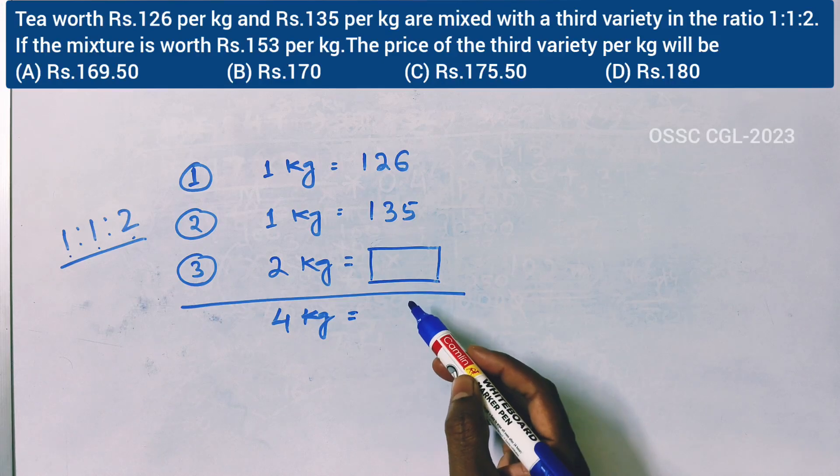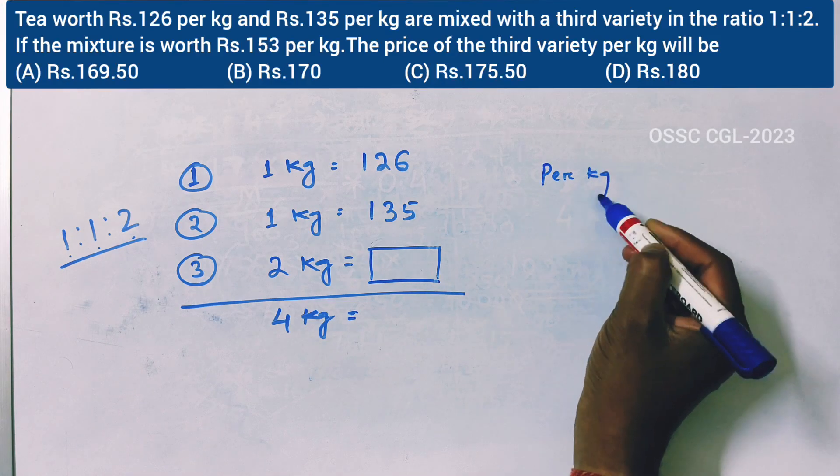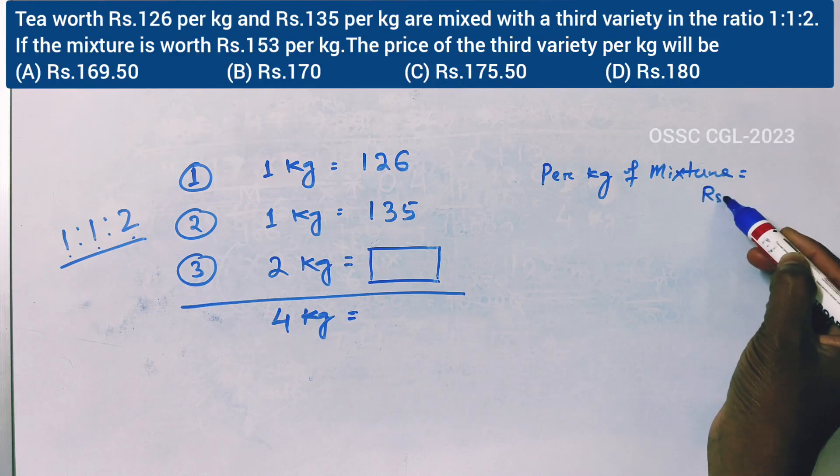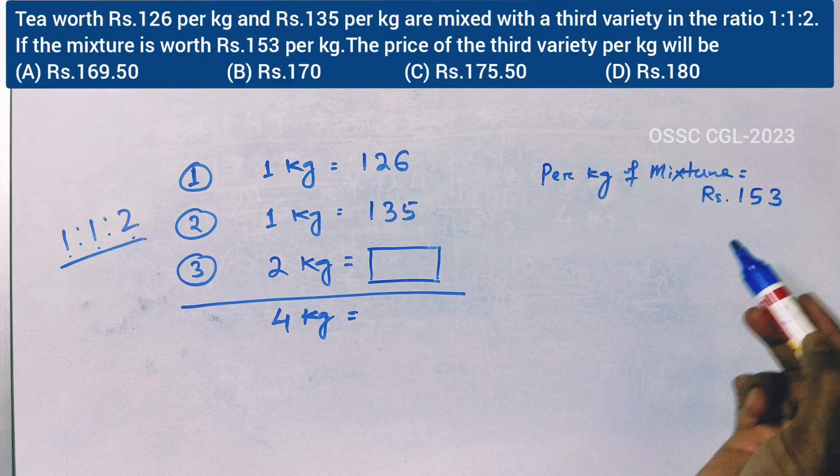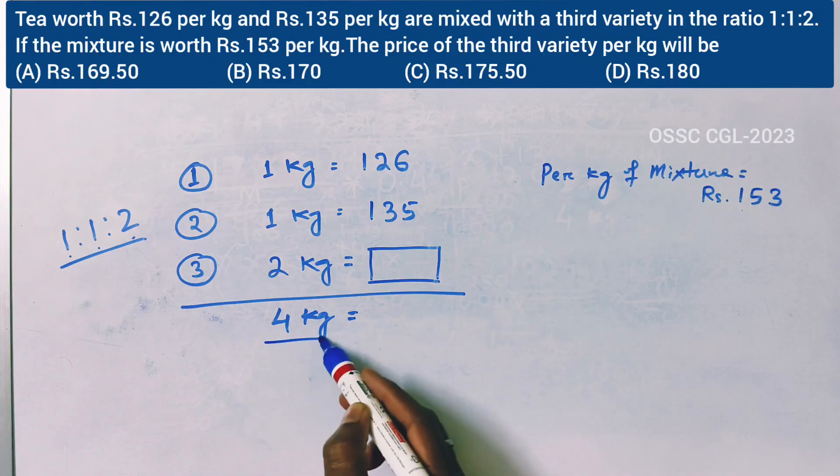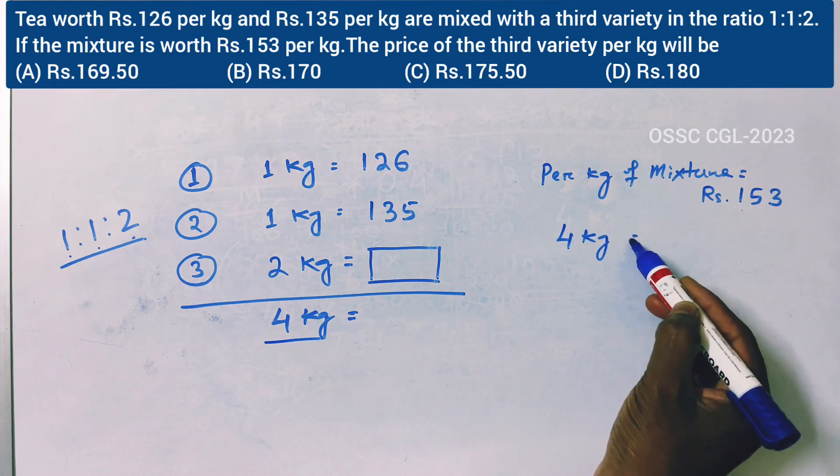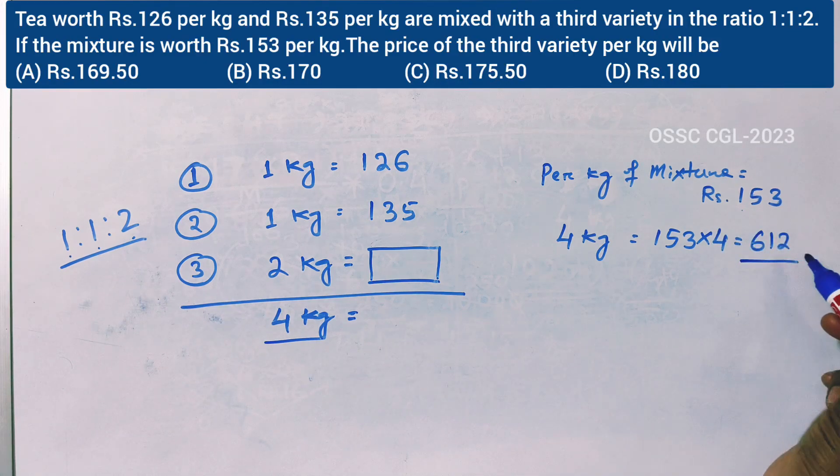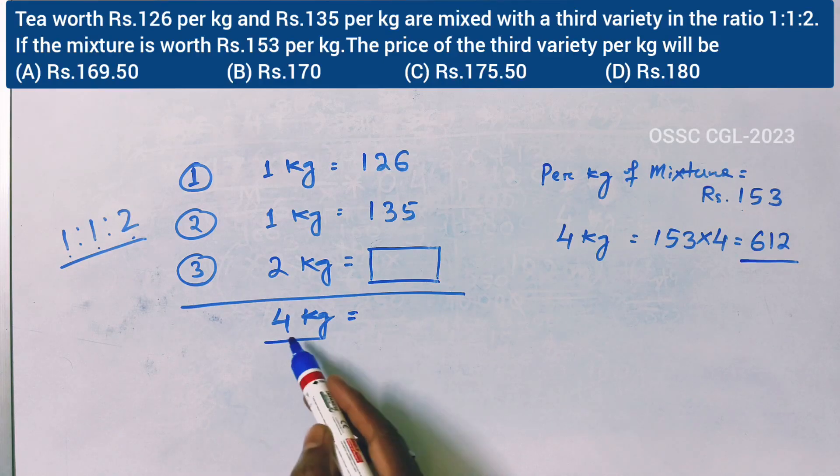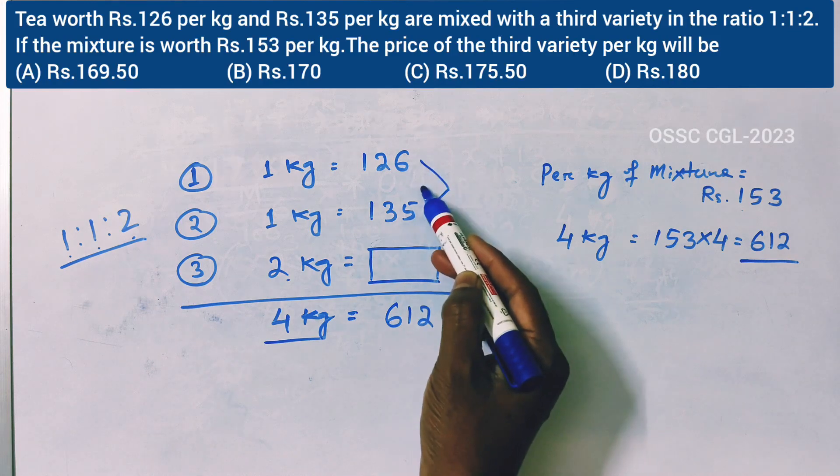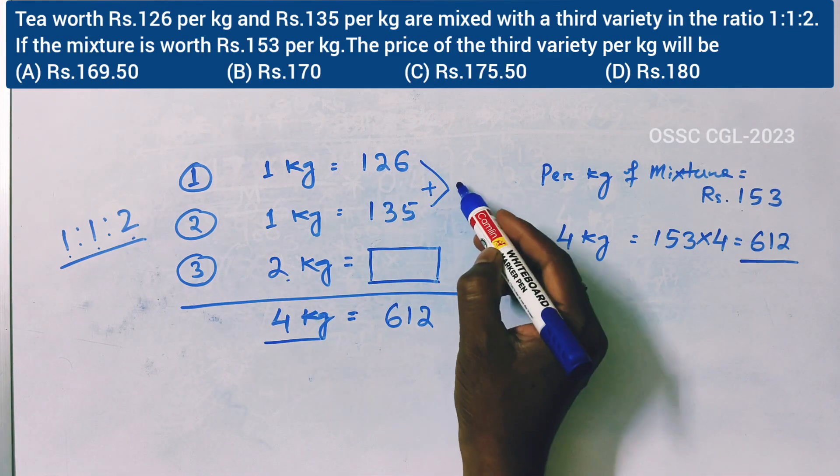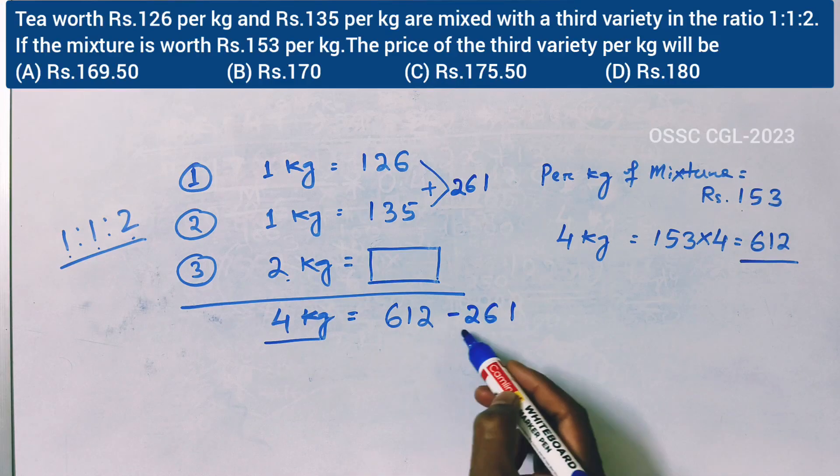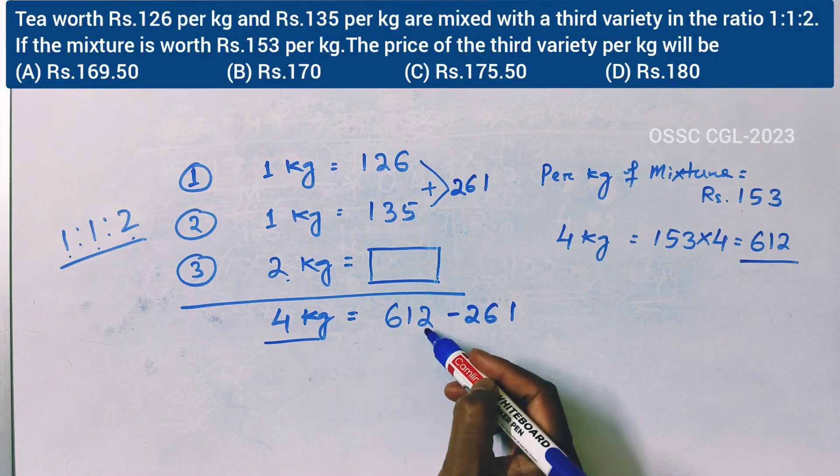Per kg of mixture is Rs. 153, so 4 kg of mixture equals 153 × 4 = Rs. 612 total.